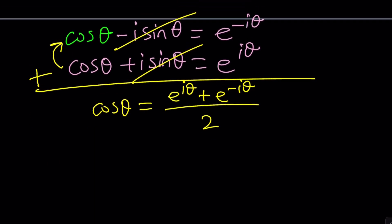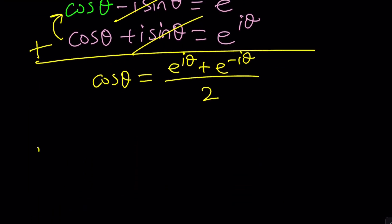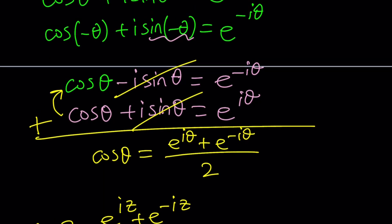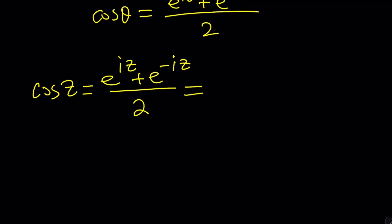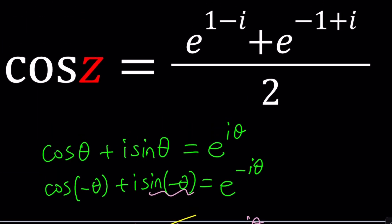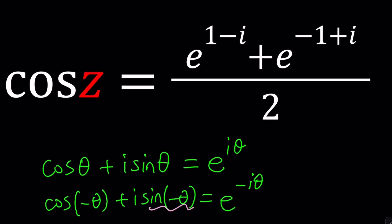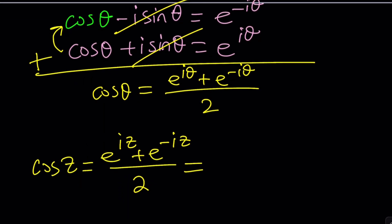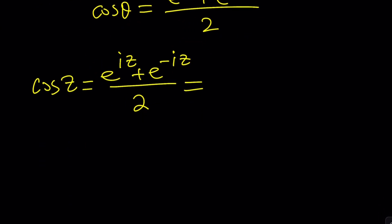Now what we can do is replace theta with z. So cosine z equals e to the iz plus e to the negative iz divided by 2. We're going to set this equal to the given expression on the right-hand side: e to the power 1 minus i plus e to the power negative 1 plus i all over 2.